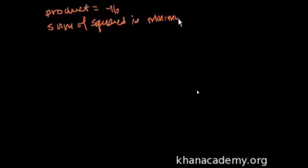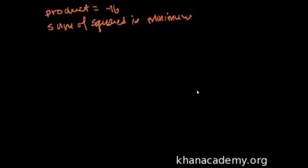These optimization problems will all impose some type of constraints and then ask: for what numbers do we get a maximum value or a minimum value? So let's do this problem. Two numbers whose product is negative 16 and the sum of their squares is a minimum — let's call those two numbers x and y.